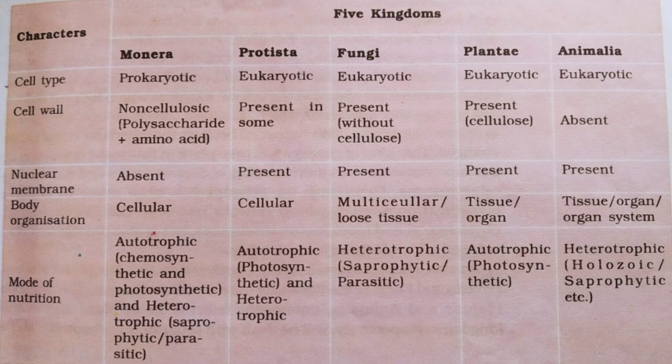The final kingdom is Kingdom Animalia. The cell type is eukaryotic and cell wall is absent. Nuclear membrane is present and they show tissue, organ, and organ system level of body organization. They show heterotrophic — that is holozoic or saprophytic — mode of nutrition.